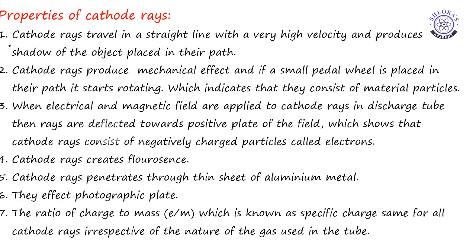All these are the properties of cathode rays. Cathode rays travel in a straight line with a very high velocity and produces shadow of the object placed in their path. Cathode rays produce mechanical effect, and if a small pedal wheel is placed in their path it starts rotating, which indicates that they consist of material particles, means they should possess some mass. When electrical and magnetic field are applied to cathode rays in the discharge tube, then rays are deflected towards positive plate of the field, which shows that cathode rays consist of negatively charged particles called electrons.